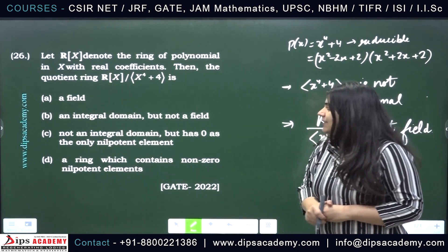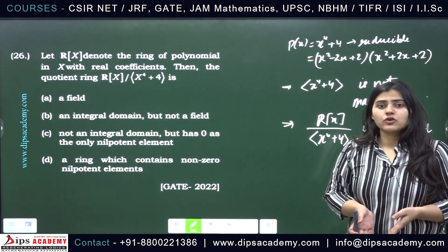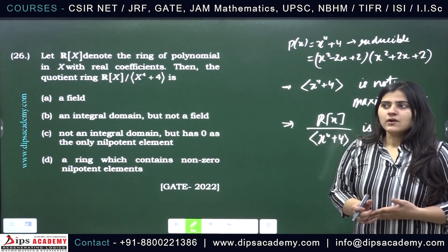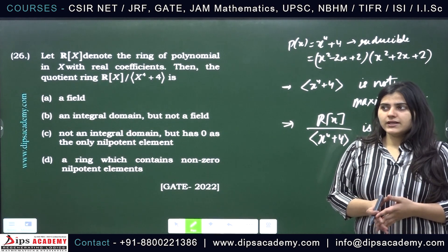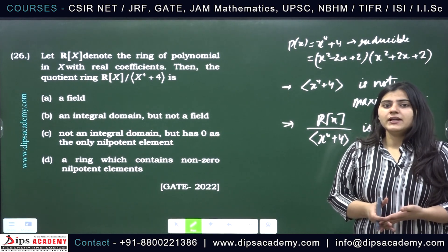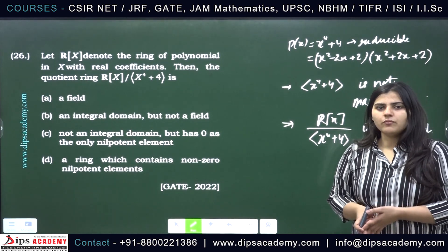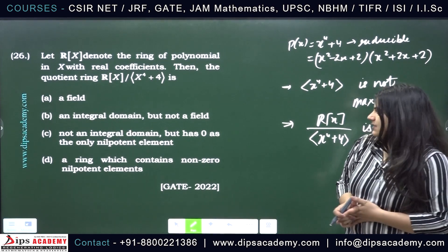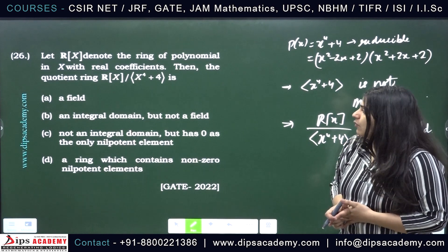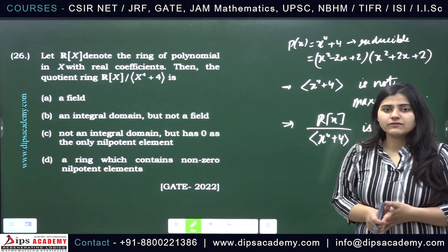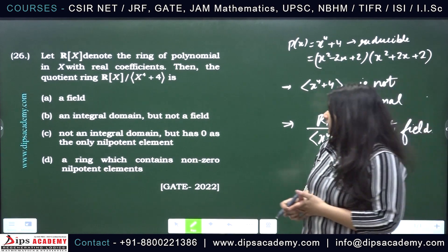Next, we need to find out whether this quotient ring is an integral domain or not. It will be an integral domain if it is free from zero divisors. So we need to check whether it has zero divisors or not.